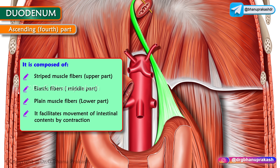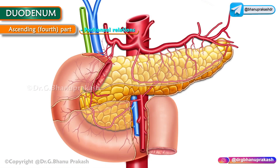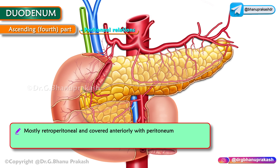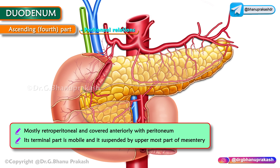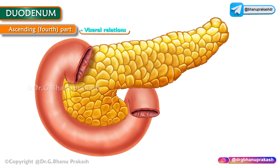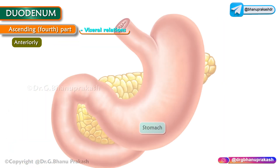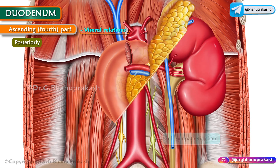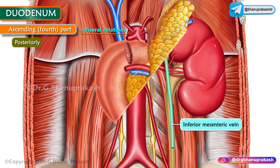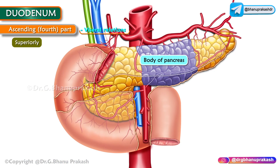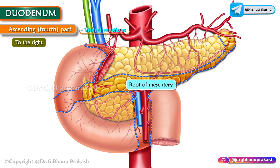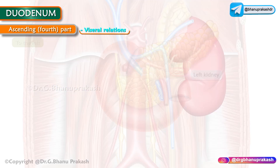The ligament of Treitz facilitates movement of intestinal contents by contraction, which widens the angle of the duodeno-jejunal flexure. The fourth part is mostly retroperitoneal, covered anteriorly with peritoneum; its terminal part is mobile and suspended by the uppermost part of the mesentery. Anteriorly: transverse colon, transverse mesocolon, lesser sac, and stomach. Posteriorly: left sympathetic chain, left renal artery, left gonadal artery, and inferior mesenteric vein. Superiorly: body of the pancreas.